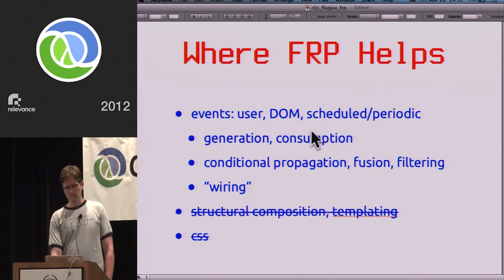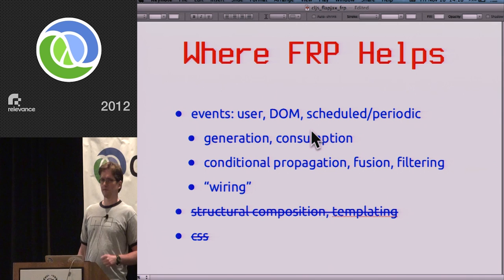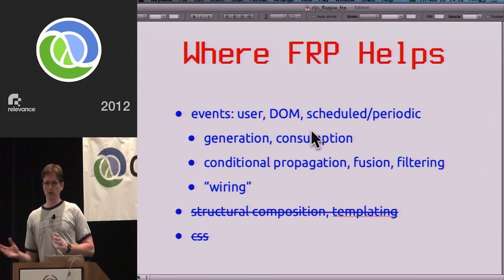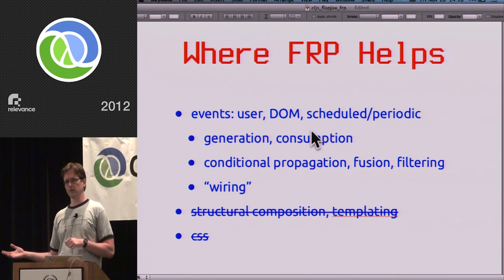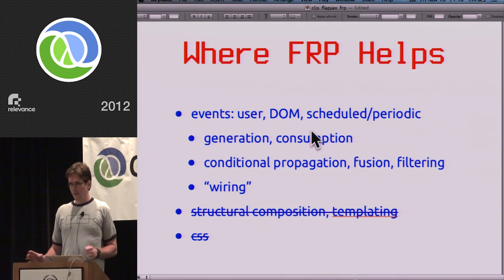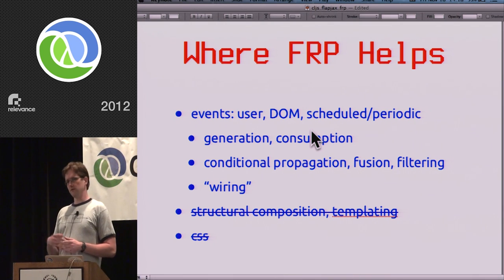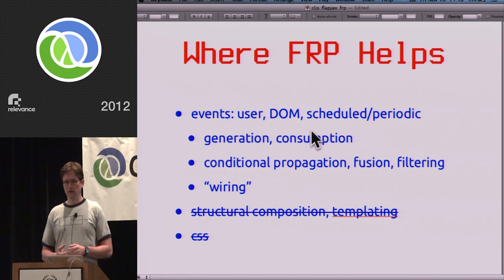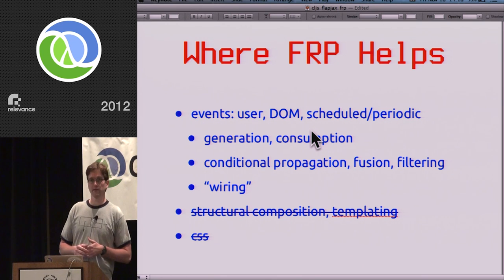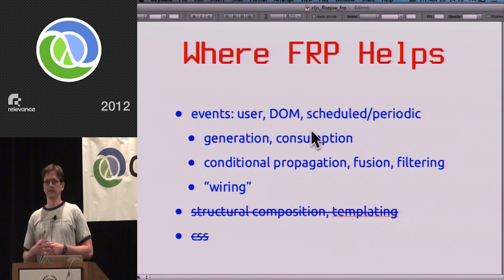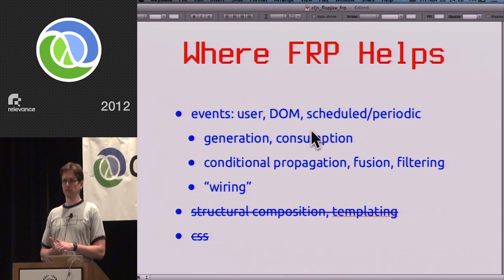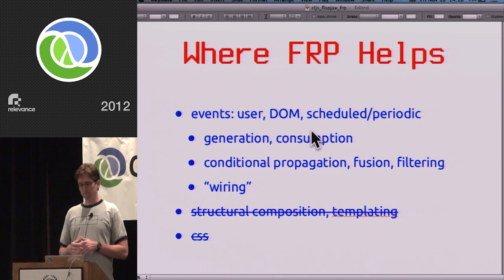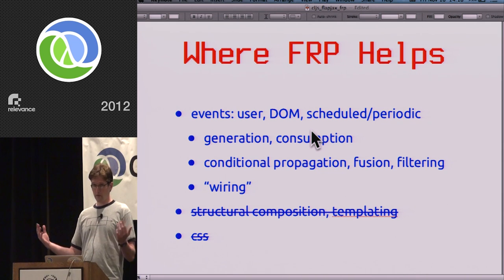What does Flapjax give us? A lot of FRP solutions claim to solve everything in the domain — templating languages, graphics, the whole web app. Flapjax just gives us one thing: the ability to turn events into streams of events so we can work with them like values. In a browser there are a few flavors of events: user events like 'Bob clicked the button', DOM events like successful Ajax callbacks, and scheduled or periodic events like heartbeats or buddy list refreshes. Flapjax gives tools for all of those.